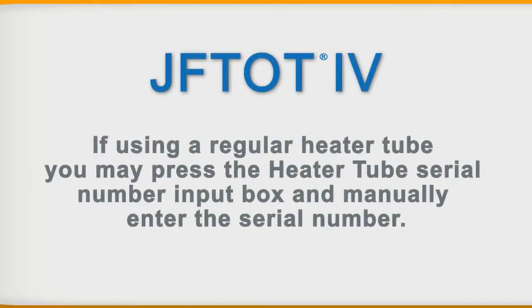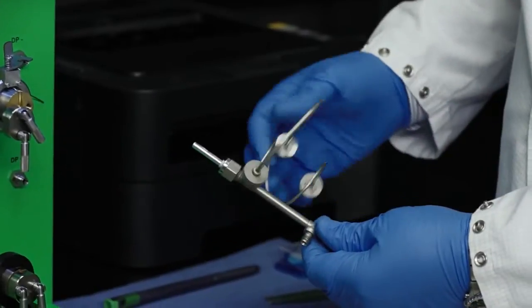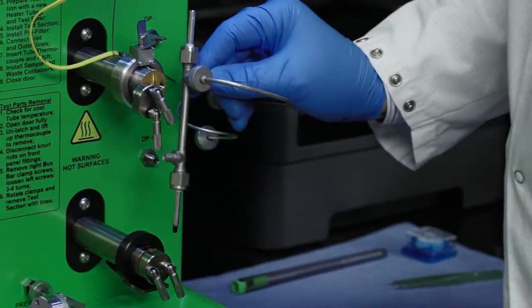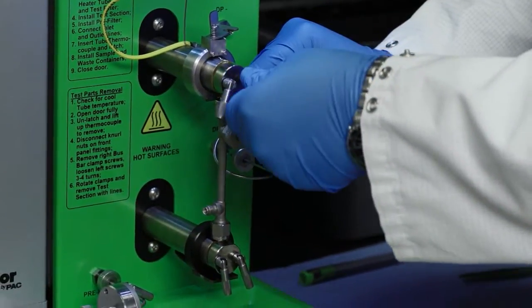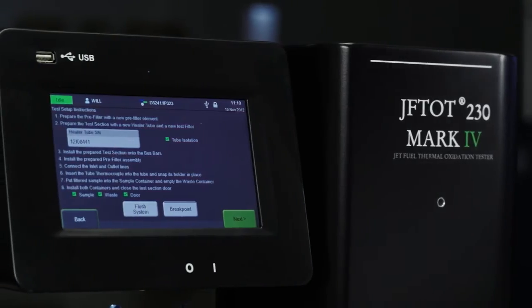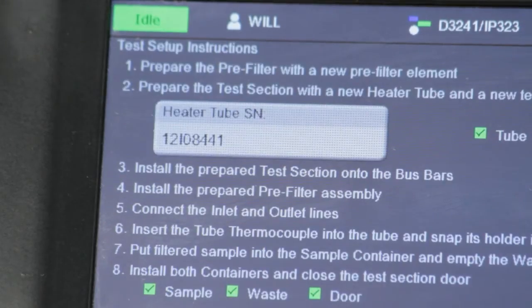If using a regular heater tube, you may press the heater tube serial number input box and manually enter the serial number. Otherwise, continue with installing the test components. Do a quick inspection of the test section assembly, and after you confirm that it's correct, install it in the bus bars. If you use an intelligent heater tube, the serial number will automatically populate the heater tube serial number box.